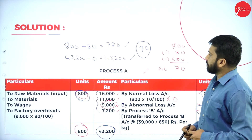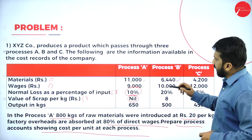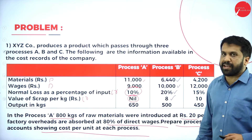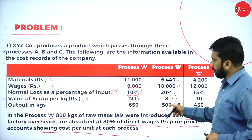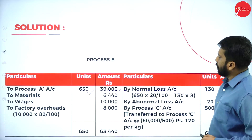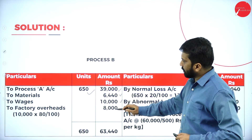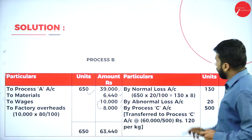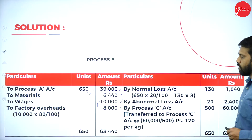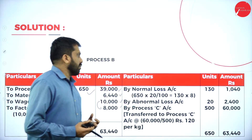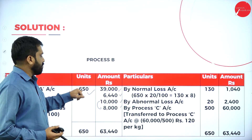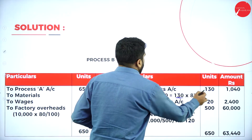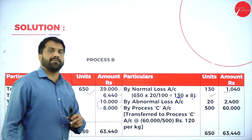For Process B: input from Process A is 650 kg at Rs. 39,000. Add material, wages, and factory overhead (80% of wages = Rs. 8,000). Normal loss is 20% of 650 = 130 units, sold at Rs. 8 each: 130 × 8 = Rs. 1,040. Output is 500 kg.